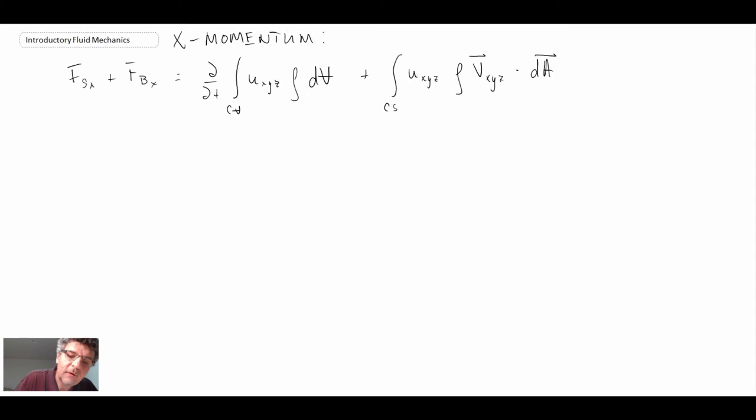For the x momentum equation, a couple of things we can note right off the beginning: First of all, we were told to neglect body forces, that goes away. And we're also told that the flow was steady, and consequently that term goes away. Do we have a surface force? Yeah, sure we do. That's the force that is causing the control volume to move at constant velocity. So we do have a surface force in the x. Let's go on and continue working with that.